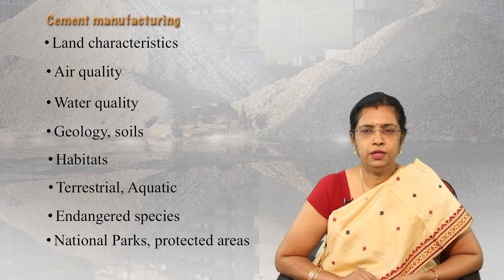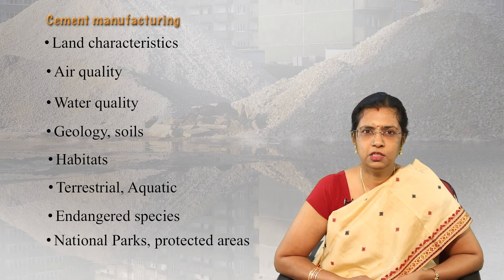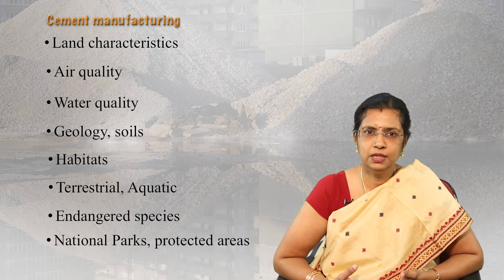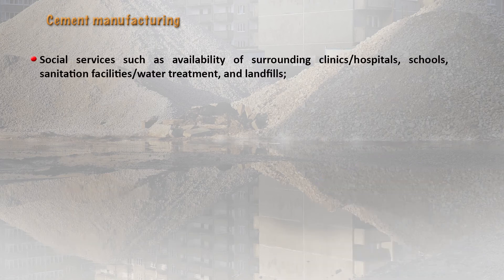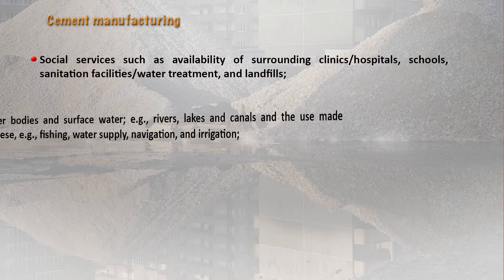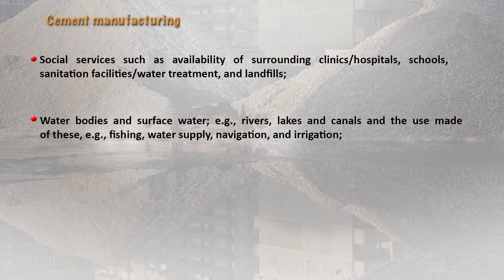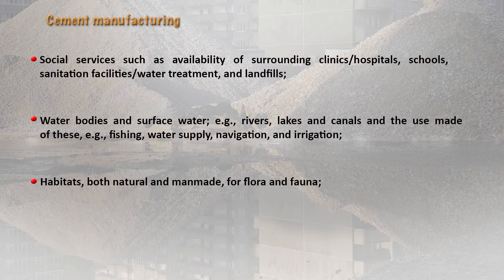Finally, land characteristics, air quality, water quality, geology, soils, and habitats need to be assessed. Terrestrial and aquatic habitats need to be evaluated, along with whether there are any endangered species or national parks and protected areas of interest. Social services such as surrounding clinics, hospitals, schools, sanitation facilities, water treatment, and landfills should be noted. Water bodies and surface water — rivers, lakes, and canals — their uses for fishing, water supply, navigation, and irrigation, as well as natural and man-made habitats for flora and fauna must all be described.